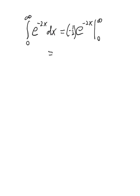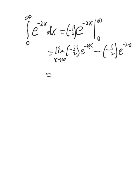Since we can't plug in infinity, we take the limit as x goes to infinity of minus one-half e to the minus 2x, minus plugging in the lower limit at x=0. As x goes to infinity, e to the minus 2x is the same as 1 over e to the 2x, which goes to 0. Two negatives make a positive, and e to the 0 is 1, so our answer is one-half.